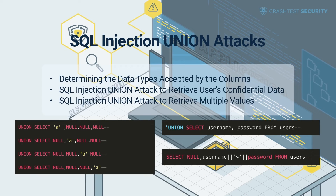Determining the data types accepted by the columns: since the data of interest in an injection attack is typically a string, adversaries intend to uncover one or more columns of data type string. This is achieved by including a simple string instead of a null for each column in the queries. Assuming the original query returns four columns, the queries to identify columns with string data would look similar to the code shown in the video. When the union is done between the string and the column where the column also happens to be a string, the malicious query succeeds; otherwise, the query returns a database error message. Having determined the number of columns returned by the query and established the data type accepted by each column, attackers can proceed with further injection attacks via text input fields.